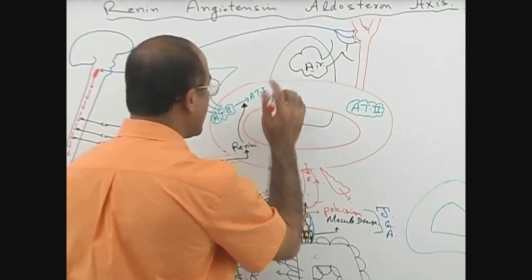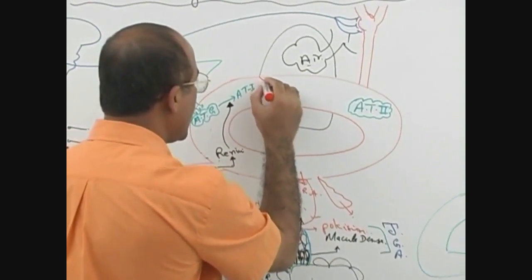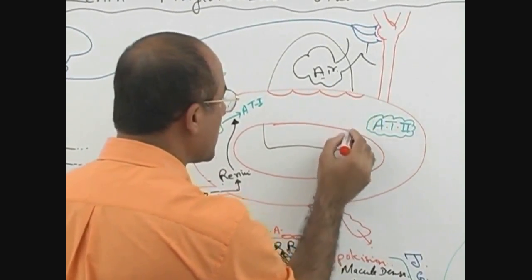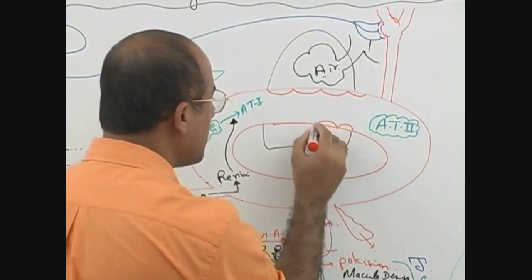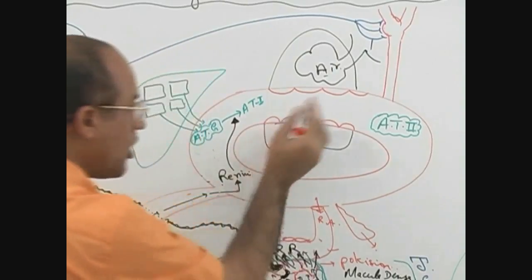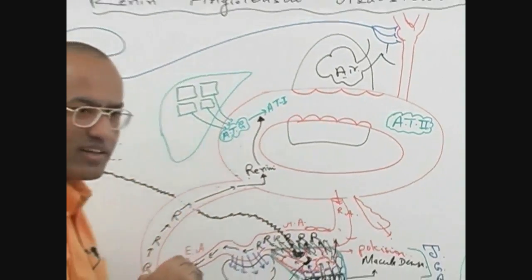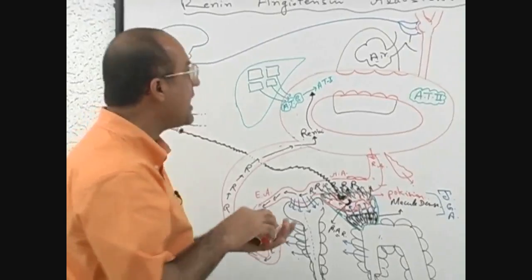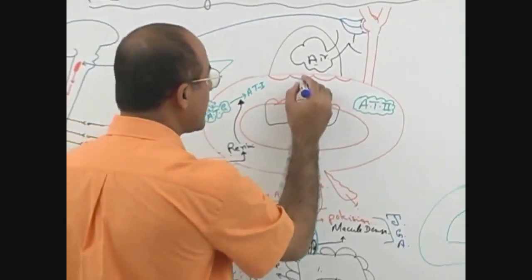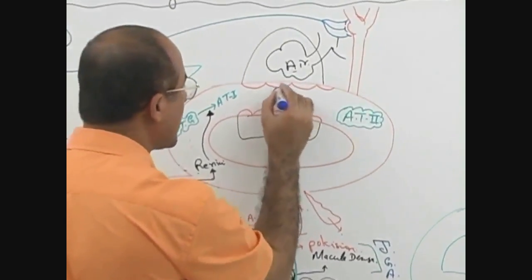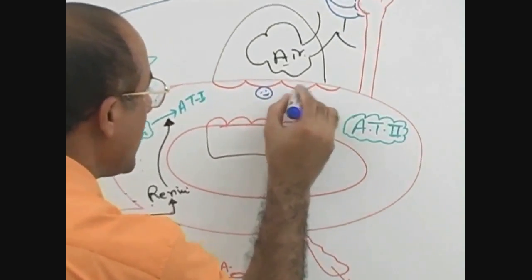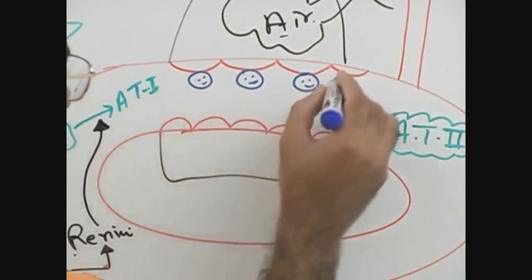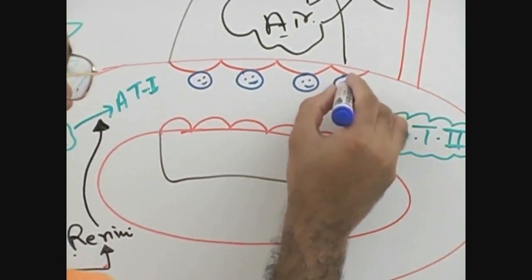On the endothelial cells of pulmonary capillary beds, there is a unique enzyme expressed. This enzyme is expressed on the surface of endothelial cells. That is why this enzyme is called an ectoenzyme,